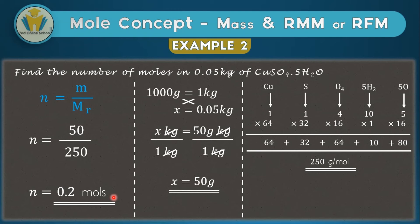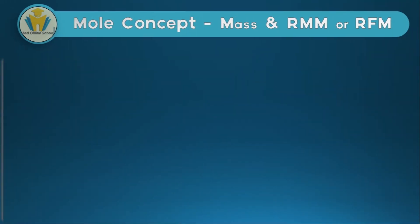One thing to note about units: whenever you have the number 1 as your answer, you never put an 's' — it's just 'mole'. For any other values you use 'moles'. For example, 0.1 would be written as 0.1 moles.